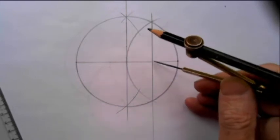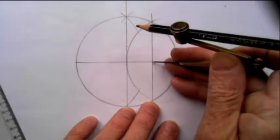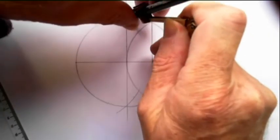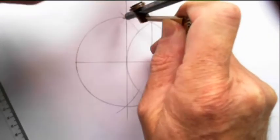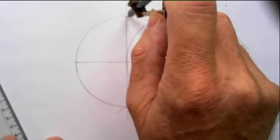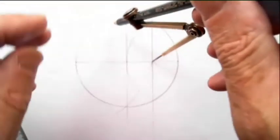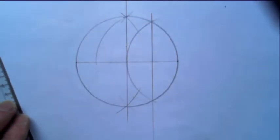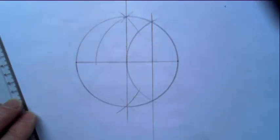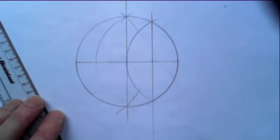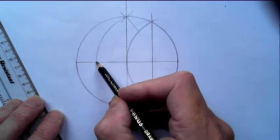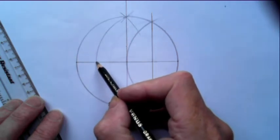That gives us a point here. If we open our compasses to the edge, the top of the circle there where the vertical line intersects it, and then swing that down to the diameter of the circle, then you've got another point there like that.